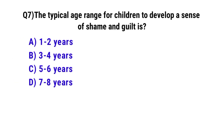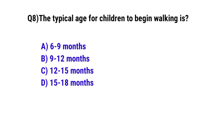Question 7: A typical age range for a child to develop a sense of shame and guilt — the correct option is B: Three to four years. Question 8: The typical age for a child to begin walking is — the correct option is C: Twelve to fifteen months.